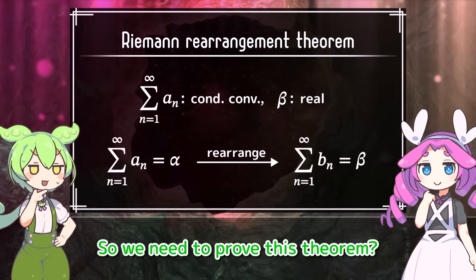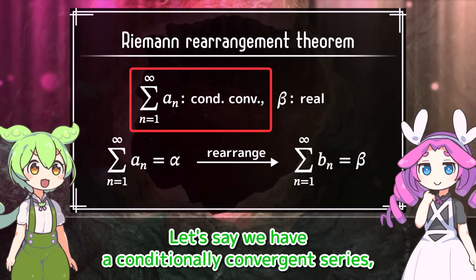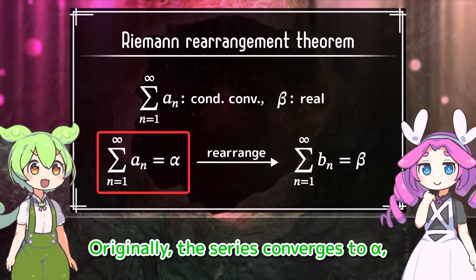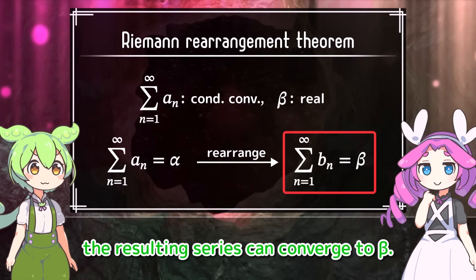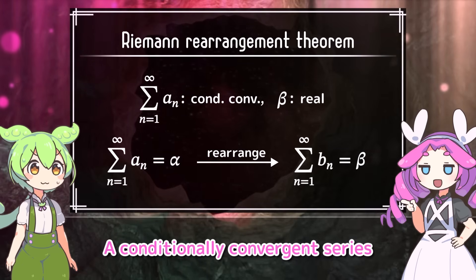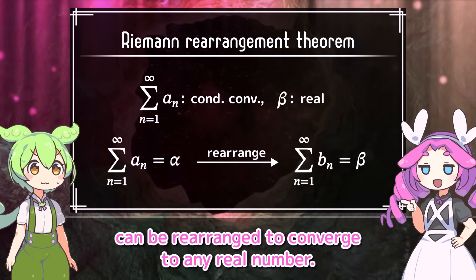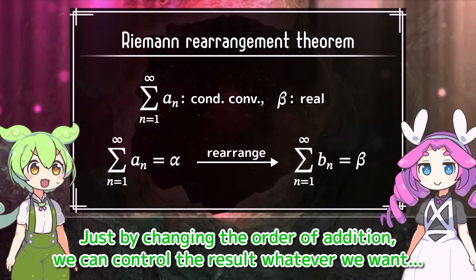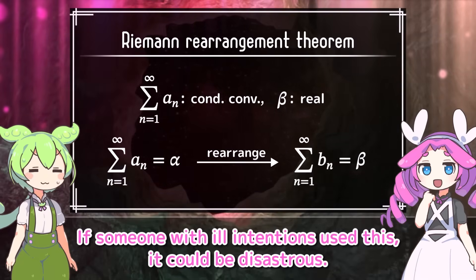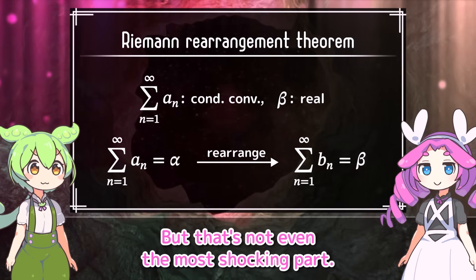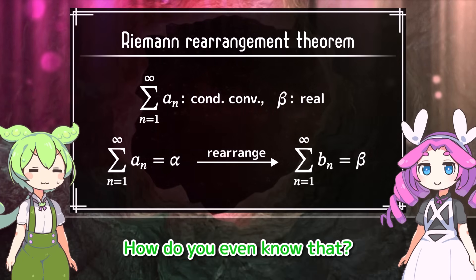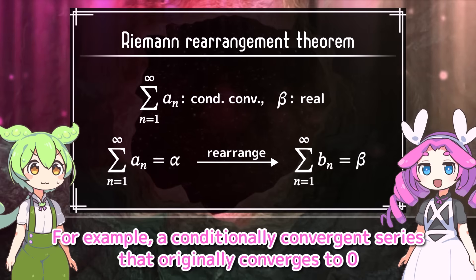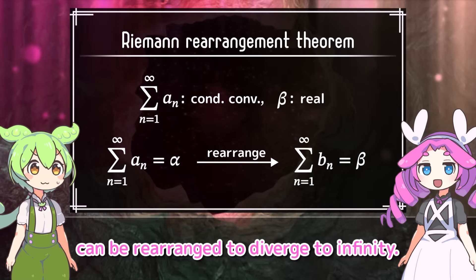We need to prove the rearrangement theorem. Let's say we have a conditionally convergent series and a real number beta. Originally the series converges to alpha, but if we rearrange the terms, the resulting series can converge to beta — a conditionally convergent series can be rearranged to converge to any real number. What a terrifying theorem — just by changing the order of addition, we can control the result. Not only that, if you rearrange the terms cleverly, you can even make the series diverge. A conditionally convergent series that originally converges to zero can be rearranged to diverge to infinity.